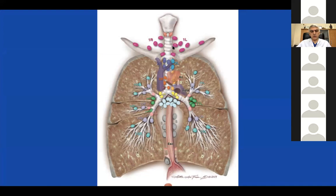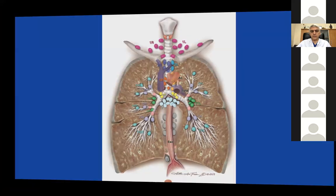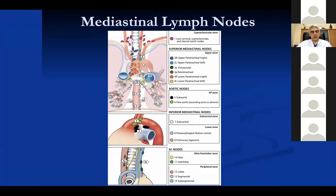Let me show you the mediastinal lymph nodes. They are numbered 1 to 14. From 1 to 9, these are mediastinal lymph nodes. From 10 to 14, these are hilar and intralobar, intrapulmonary lymph nodes. Number 10 is hilar, 11 is interlobar, 12 is lobar, 13 is segmental, 14 is subsegmental. You only need to know that lymph nodes 1 to 9 are mediastinal, and if positive ipsilaterally, the patient is N2. Lymph nodes 10 to 14 are N1 lymph nodes.